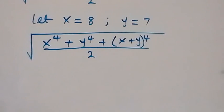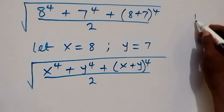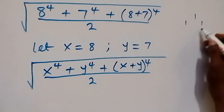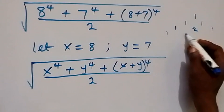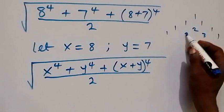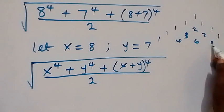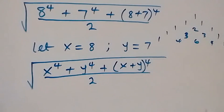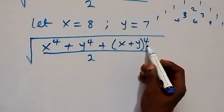To expand (x+y)⁴ we use Pascal's triangle. The coefficients for power 4 are: 1, 4, 6, 4, 1. So those are the coefficients we will use for this expansion.